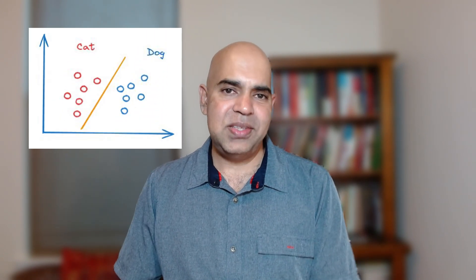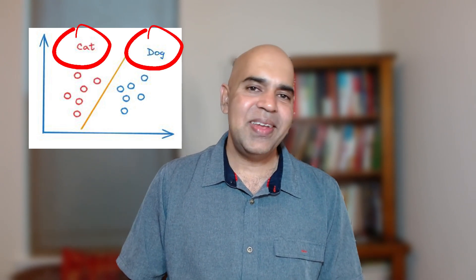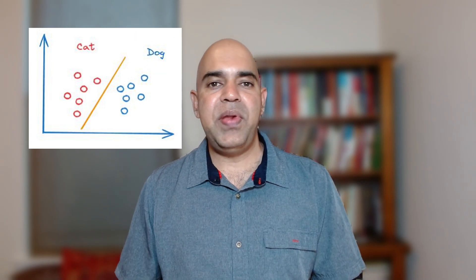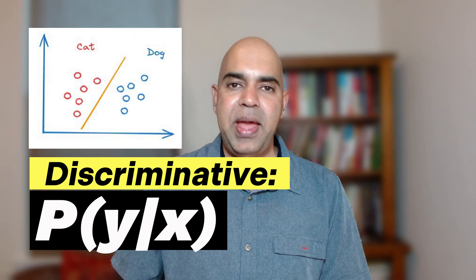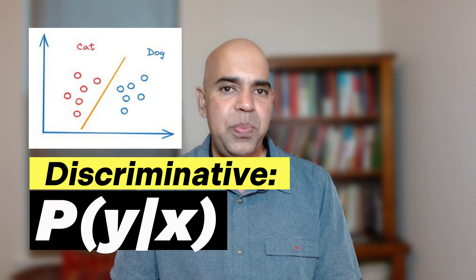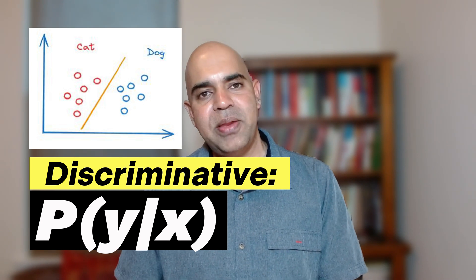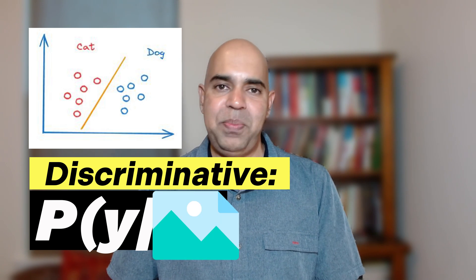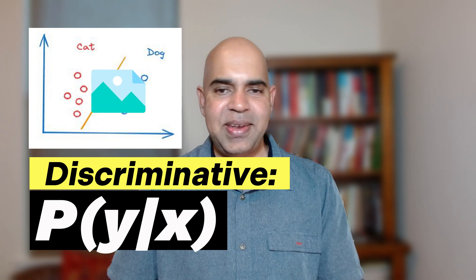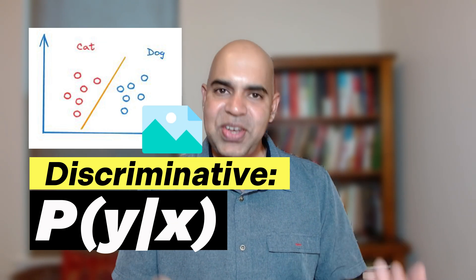The focus in discriminative learning is on discriminating between the classes. The problem is described as: given a data point x, what is the probability that the data point x has a label y? That is, given an image, what is the probability that it is a cat image and what is the probability that it is a dog image? This is an example of a discriminative learning application.